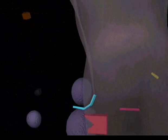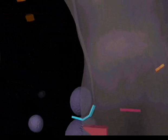The T-cell receptor is now formed by assembly of one alpha chain with one beta chain.